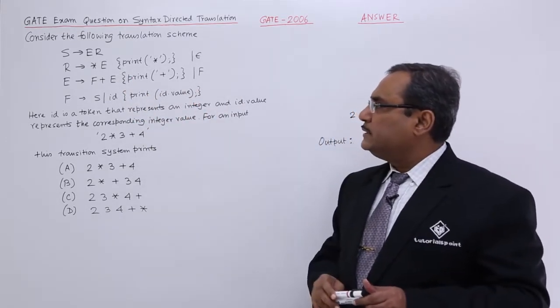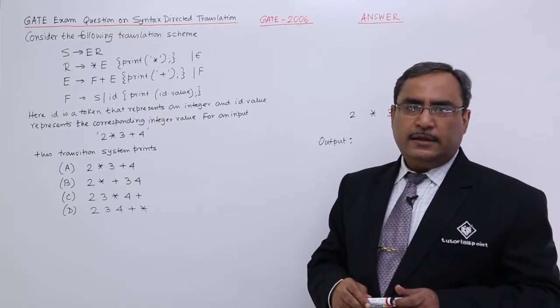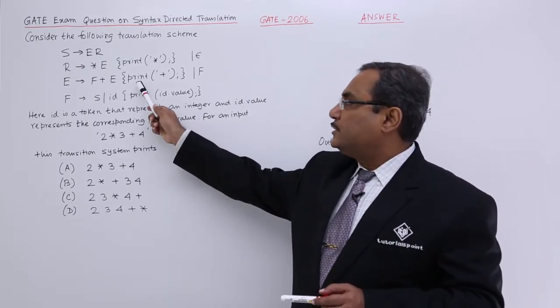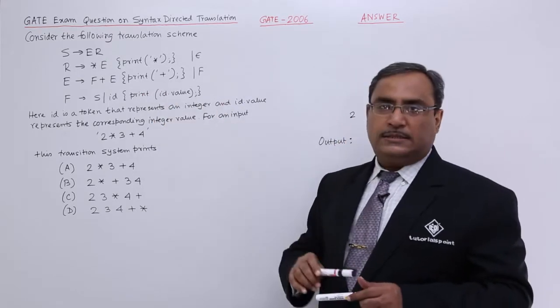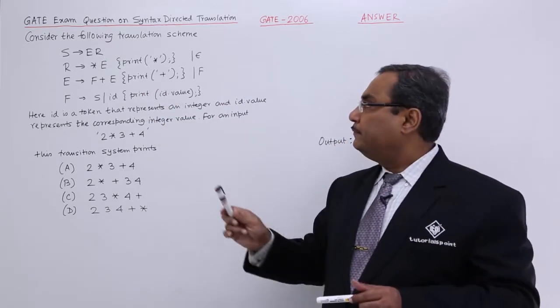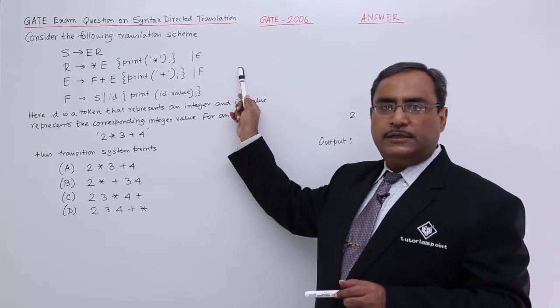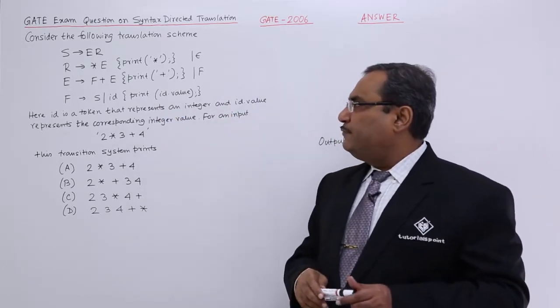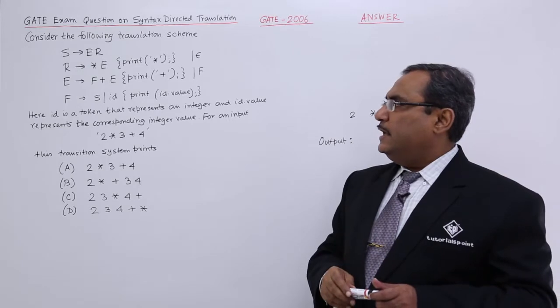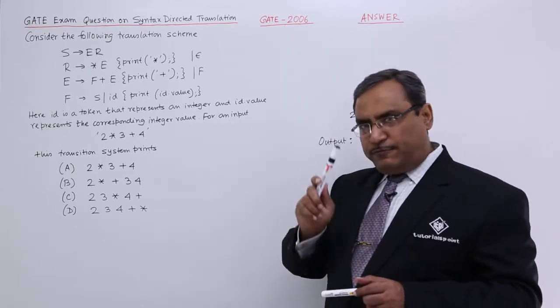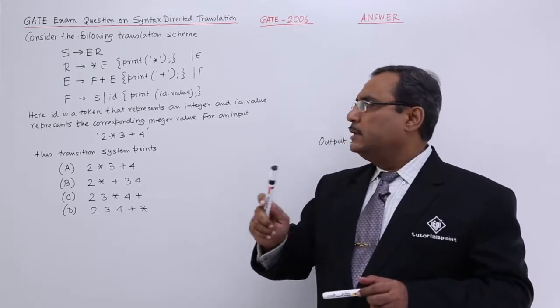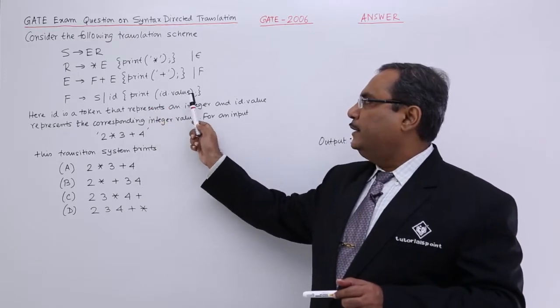Next one is E produces F plus E, that is having one semantic action that is print plus. E produces F, it is having no semantic actions mentioned. F produces S, F produces ID. F produces ID is having one semantic action print ID dot value.